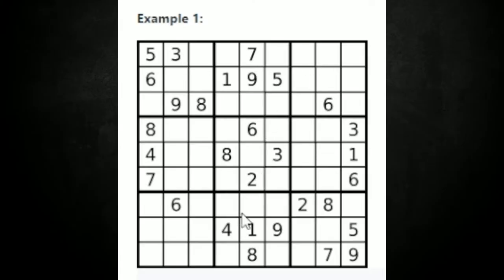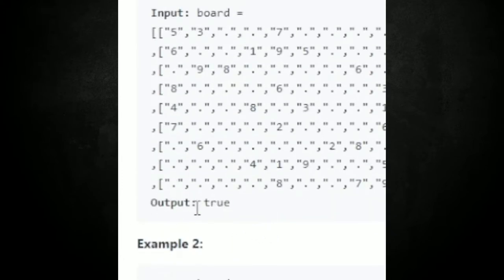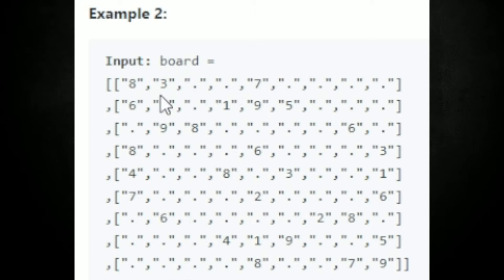Let's go into example number one. We have this sudoku board with rows, columns, and sub-boxes. From first glance I don't see anything wrong with it, so that looks like it's true. For example number two, let's look at this board and see if we can make sense of it. We have a box here, another box here.